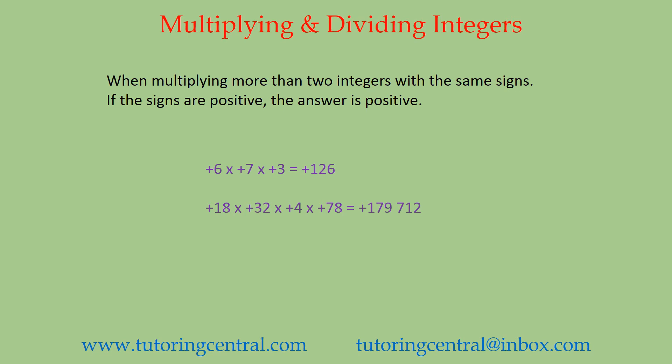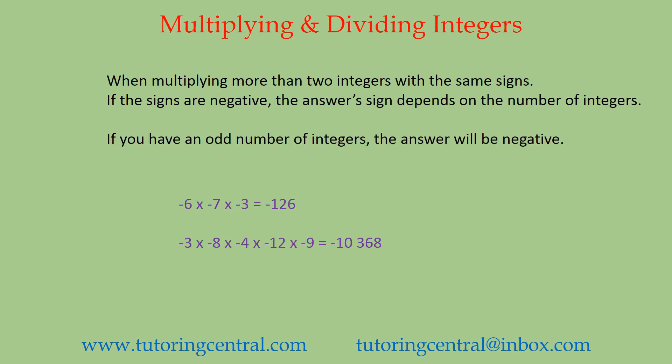In all of these I'm assuming that you know and understand how to do basic multiplication — it's just the signs that you have to watch out for. Positive 18 times positive 32 times positive 4 times positive 78 equals positive 179,712. Again, they're all positives so this is really just a straightforward multiplication question. If the signs are all negative, the answer's sign depends on the number of integers: if you have an odd number of integers the answer will be negative. For example, negative 6 times negative 7 times negative 3 equals negative 126.